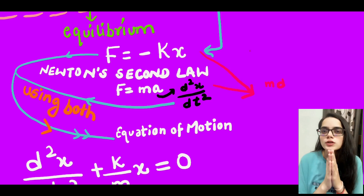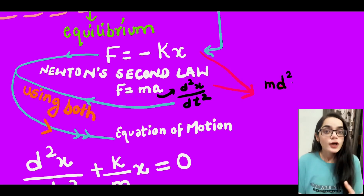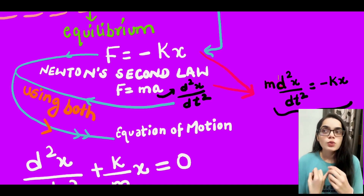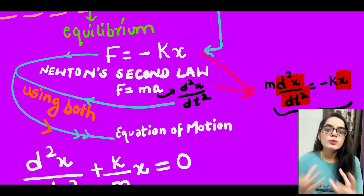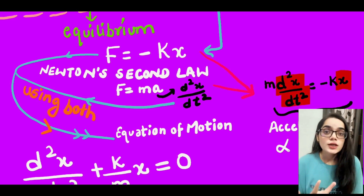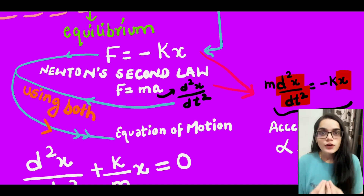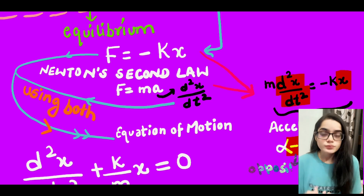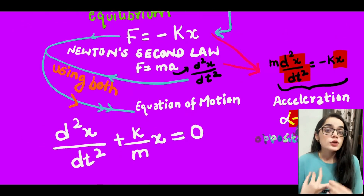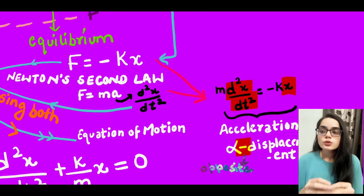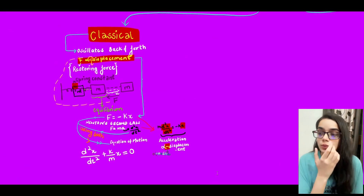To understand the system, we need the equation of motion. This will help us define the acceleration, velocity, and everything about the system. We use Newton's second law of motion combined with the restoring force to form our equation of motion. We can see this gives us a second-order differential equation.